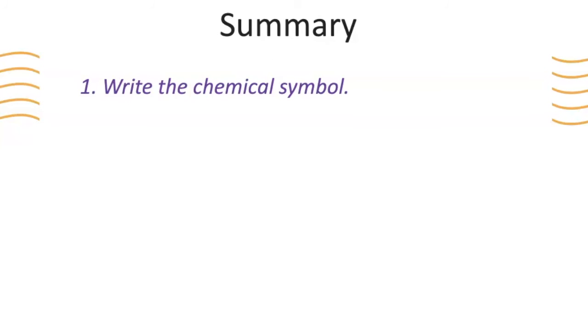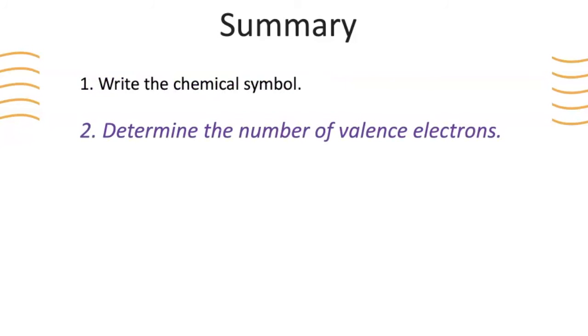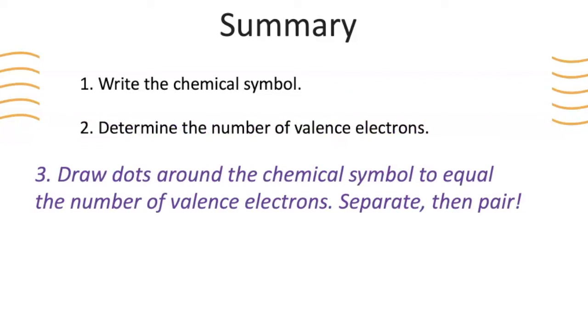To summarize how to draw Lewis dot structures, you want to first write your chemical symbol, determine the number of valence electrons by using the periodic table and its group number, and then draw dots around the chemical symbol to equal the number of valence electrons. Remember to separate, then pair.